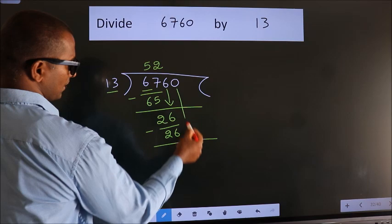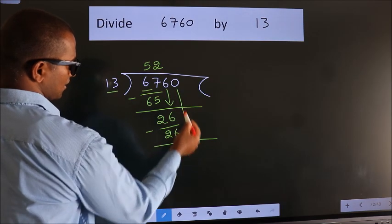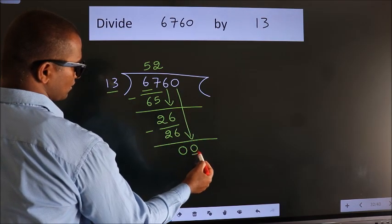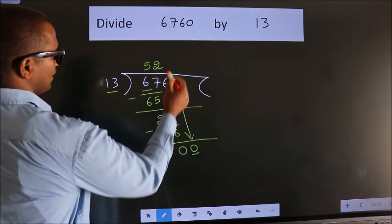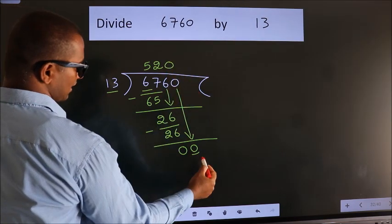After this, bring down the beside number. 0 down. So, 0. When do we get 0? In 13 table, 13 times 0 is 0.